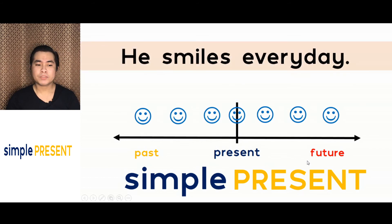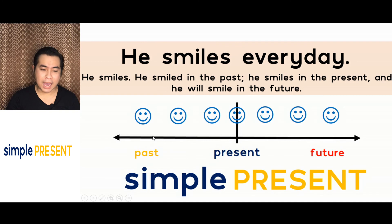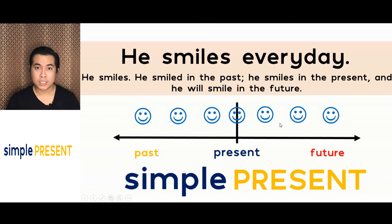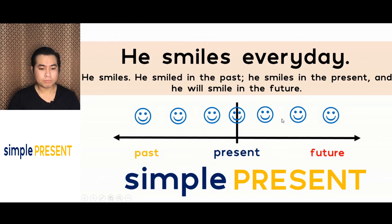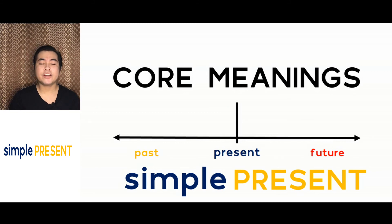The next example: 'He smiles every day.' To illustrate on this timeline, the meaning of this sentence is he smiles. He smiled in the past, he smiles in the present, and he will smile in the future. This is habitual — you always do it, or the person you're observing does this every day. In understanding the simple present, we should also understand the core meanings — these are the different meanings you could derive from the simple present.